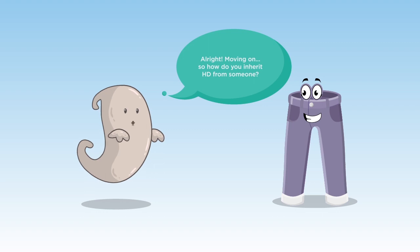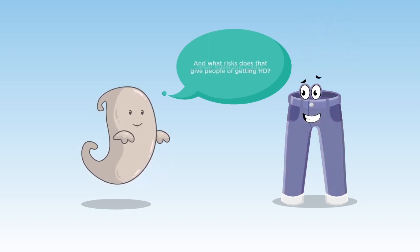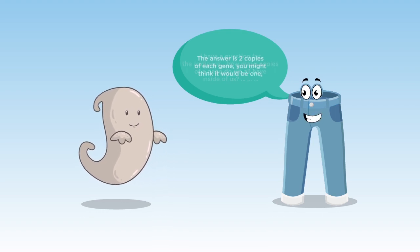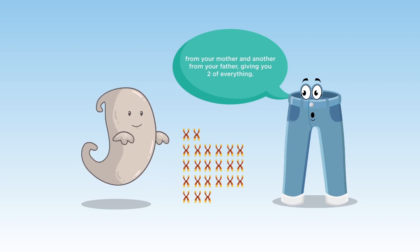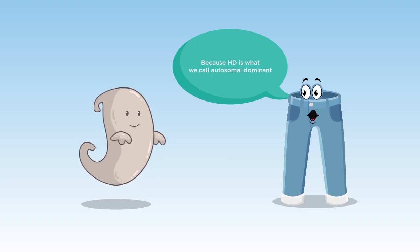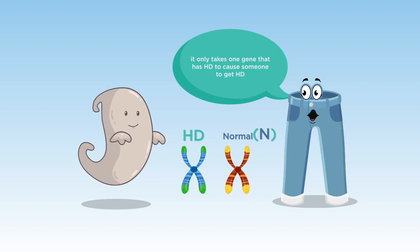Alright, moving on. So, how do you inherit HD from someone and what risks does that give people of getting HD? Great questions, Cody. I have a question for the audience. How many copies of a gene do we have inside us? The answer is two copies of each gene. You might think it would be one, but if you remember, we said that you get one chromosome of genes from your mother and another from your father, giving you two of everything. So, people actually have two copies of the gene that causes HD, one from their mom and another from dad. Because HD is what we call autosomal dominant, it only takes one gene that has HD to cause someone to get HD.